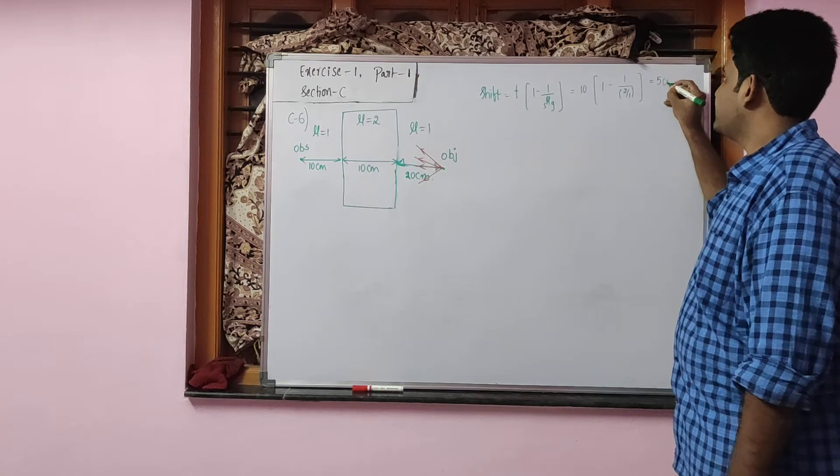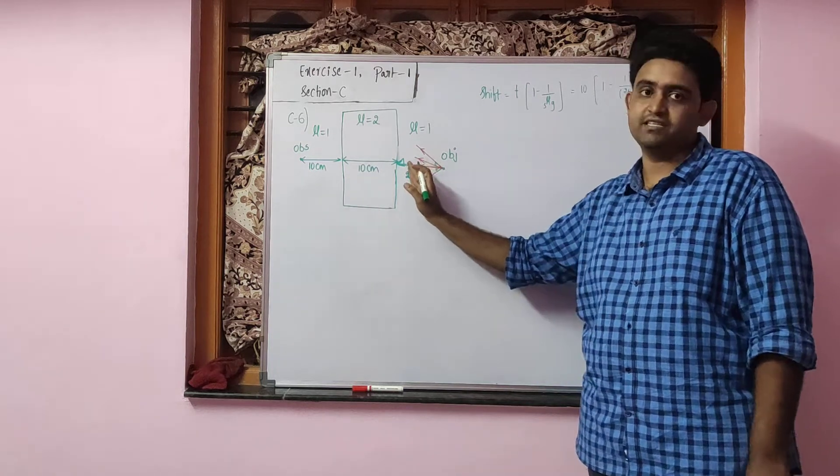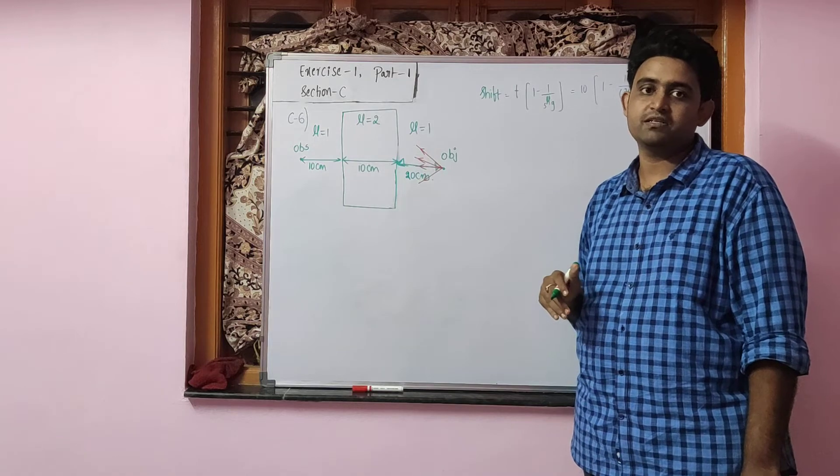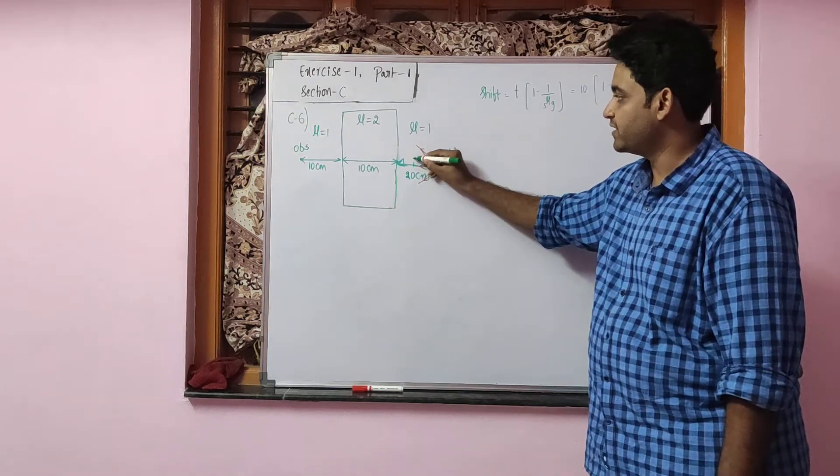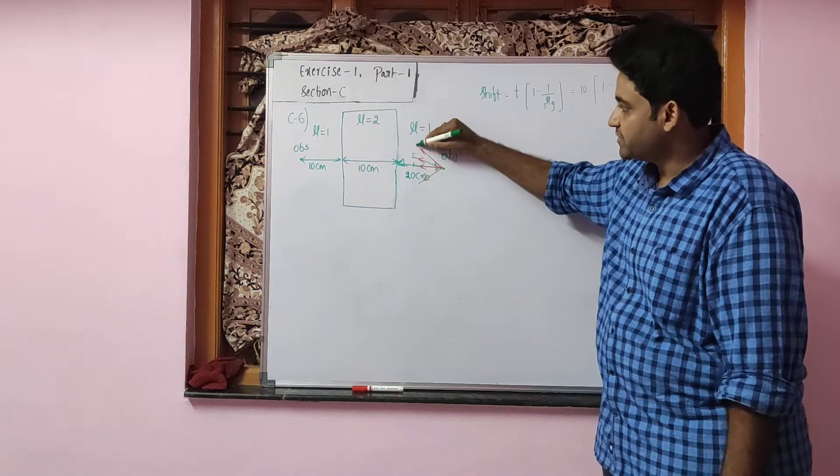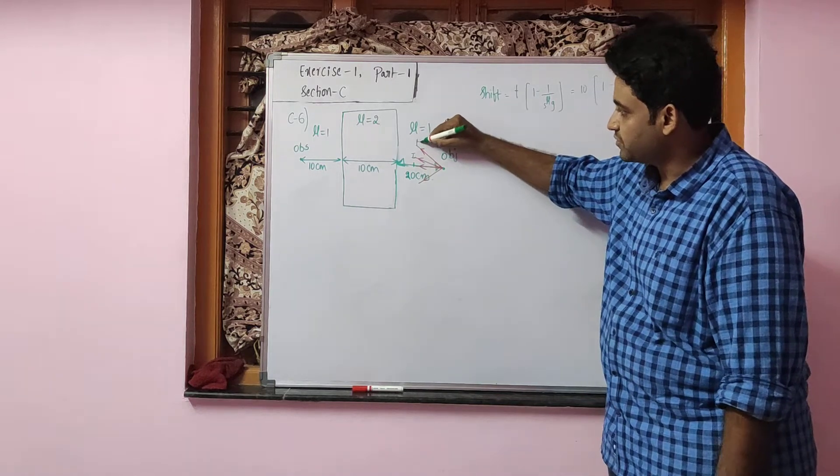So the image will be formed such that it is shifted by 5 cm from the position of the object in the direction of the travelling rays. The image will be formed somewhere here and the distance between this image and object is 5 cm.